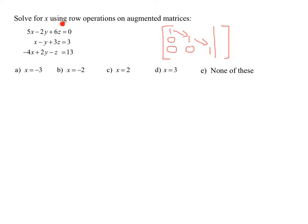In this problem, we need to solve for x using row operations on augmented matrices. Here is our system of three linear equations in three variables. Before we write the augmented matrix, we need to make sure all our equations are organized — we need x's, y's, z's, equals, and constants. Since we have that in each case, it is ready to write the augmented matrix.